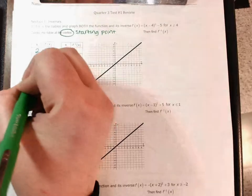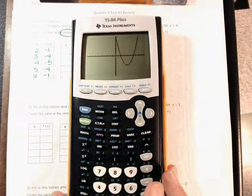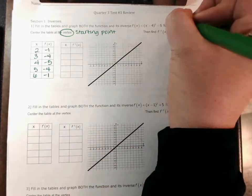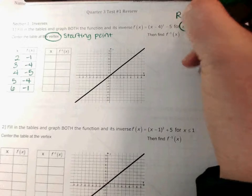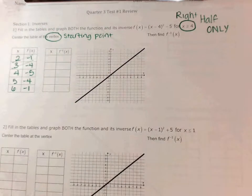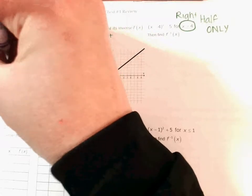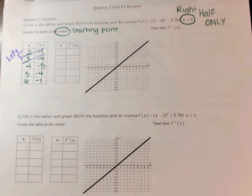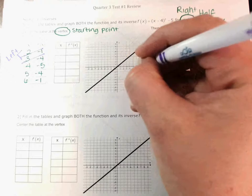Now we're going to write the two points below it: five, negative four and six, negative one. Do not graph yet. Six, negative one. Remember that for these — we haven't done this in about a week — you are only graphing one half of the squared function at a time. You don't want the whole parabola. So if I want x greater than or equal to four, is that the left half or the right half? The right half only. So what that means is you are going to cross out the top two points, because those are not the right side of the quadratic — those are on the left side.